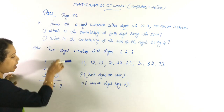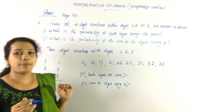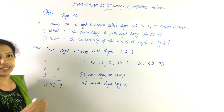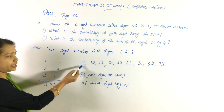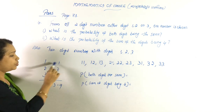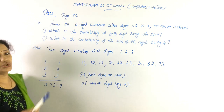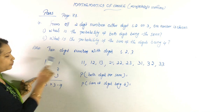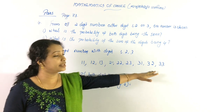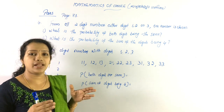The 9 two-digit numbers are: 11, 12, 13, 21, 22, 23, 31, 32, 33. So the total number of possibilities is 9.